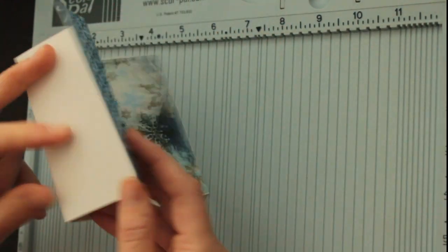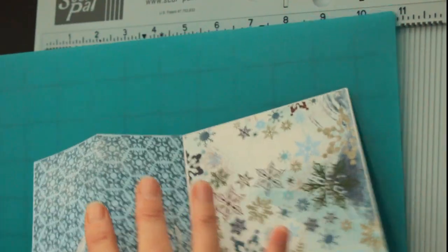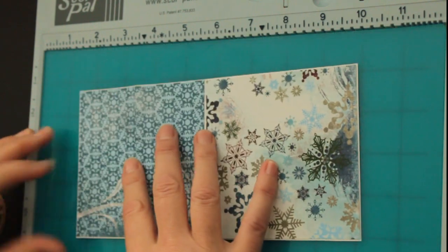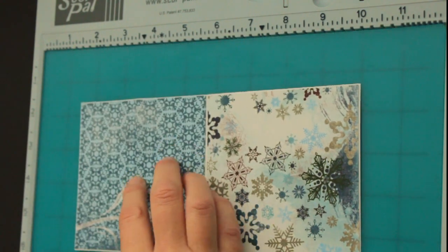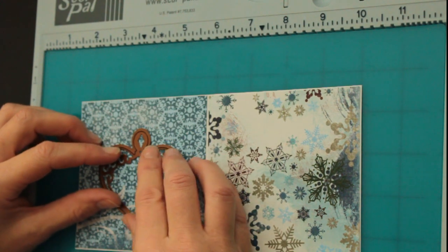Now you can add paper on the back as well, which I will do, but because it's harder to cut through three layers than through two, I will cut my shape in now and then cut it again when I add the third piece. It makes it easier.